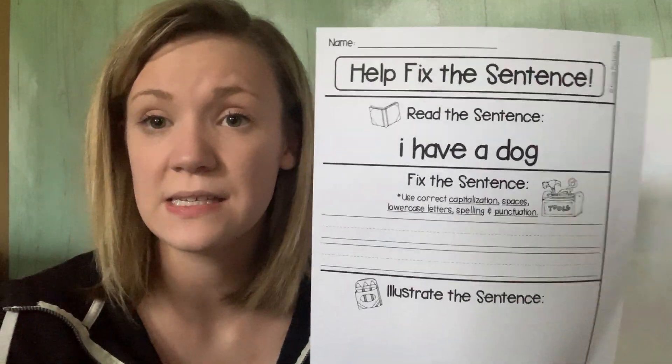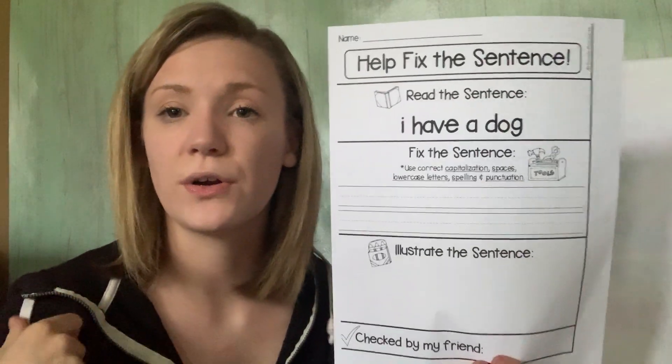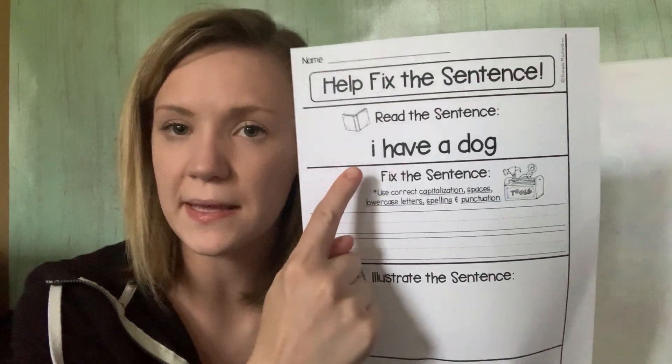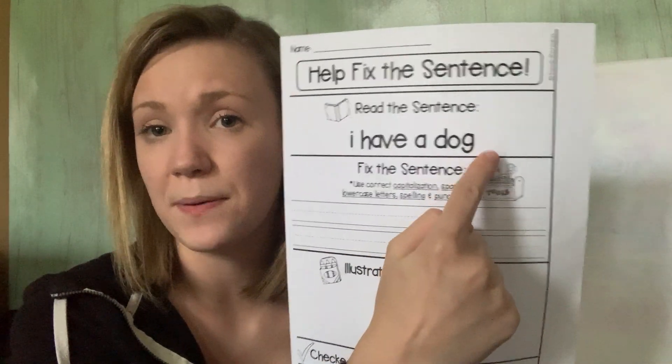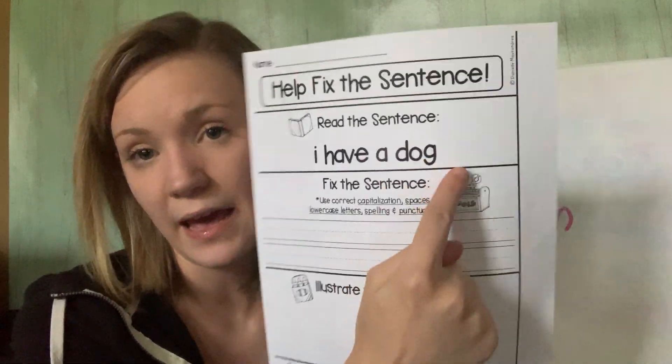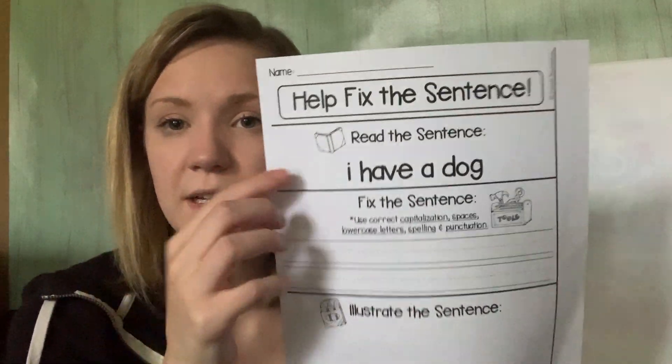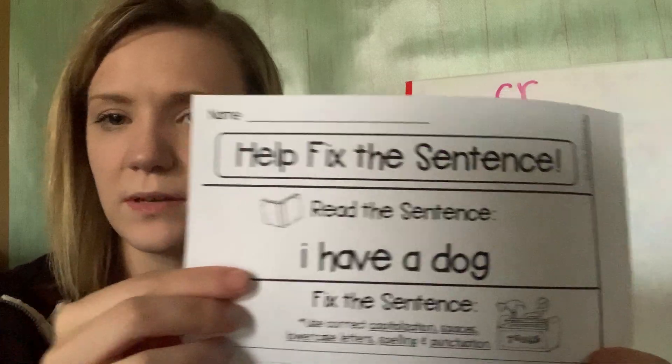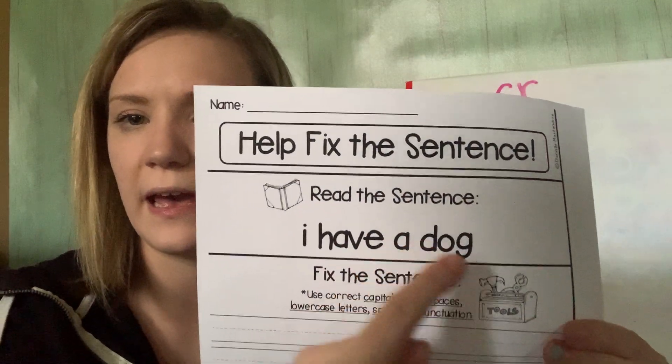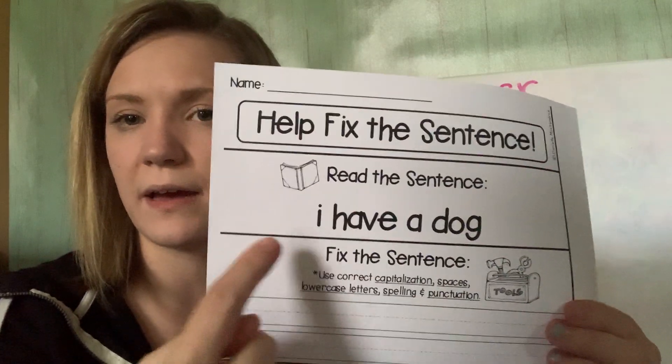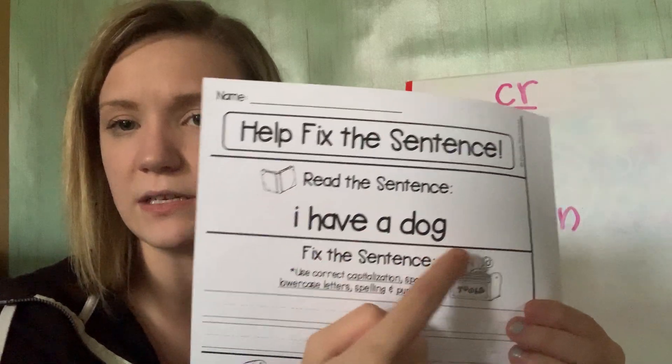Okay. So yesterday we corrected sentences. We made sure that they had correct capitalization, uppercase letters at the beginning, and we made sure that they had punctuation at the end. So what you're going to do is you're going to look at this sentence. This is read the sentence. I have a dog. Okay. So that is your sentence. I have a dog.